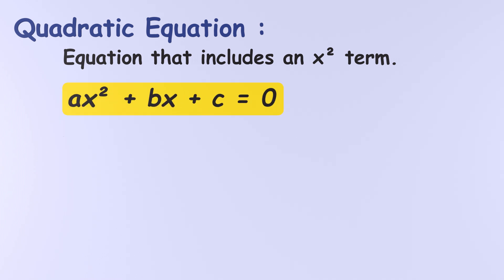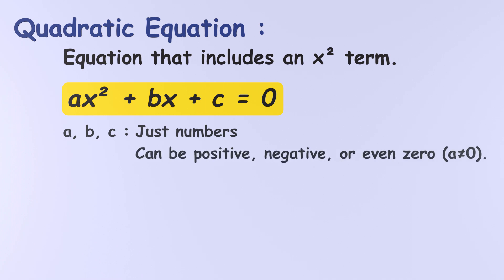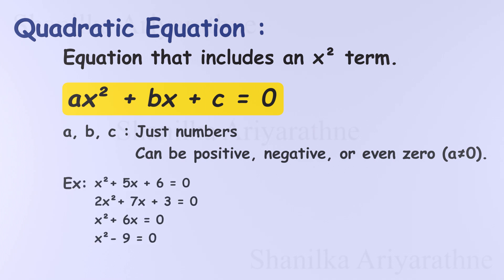A quadratic equation is just a fancy name for any equation that includes an x-squared term. The general form looks like ax-squared plus bx plus c equals zero. Here, x-squared is what makes it quadratic. If there's no x-squared, it's not a quadratic equation. a, b, and c are just numbers — constants. They can be positive, negative, or even zero. Here are some examples of quadratic equations — each one contains an x-squared term.